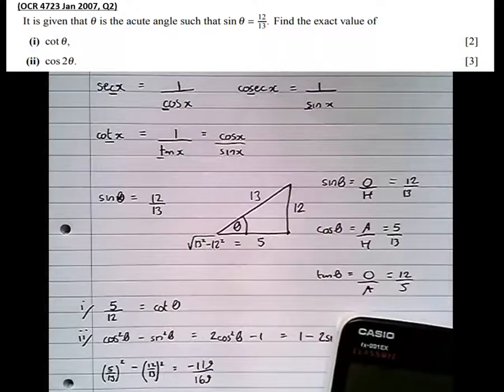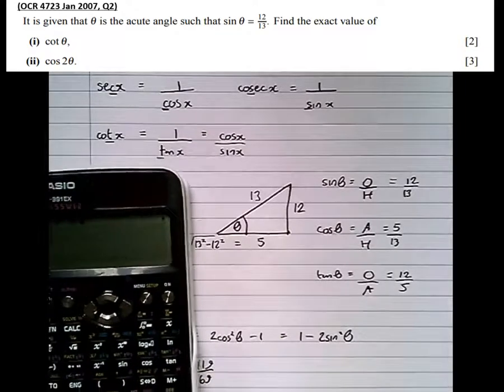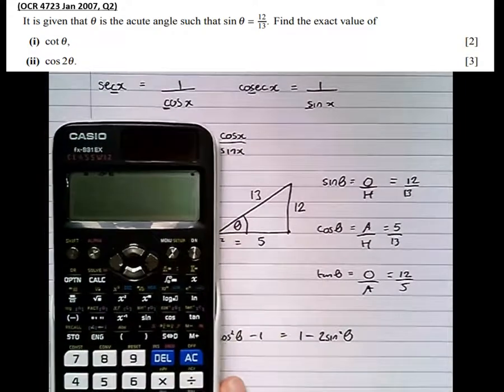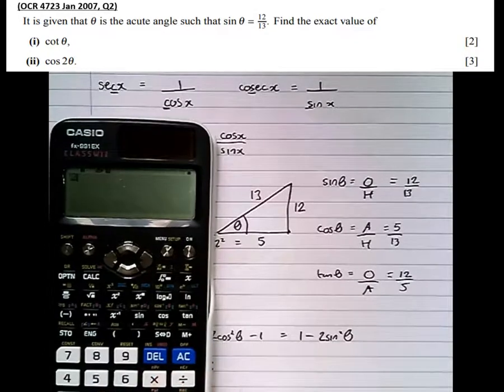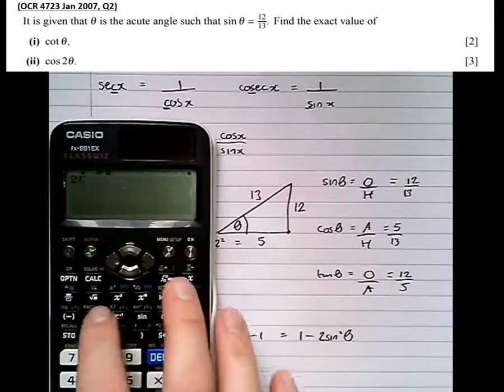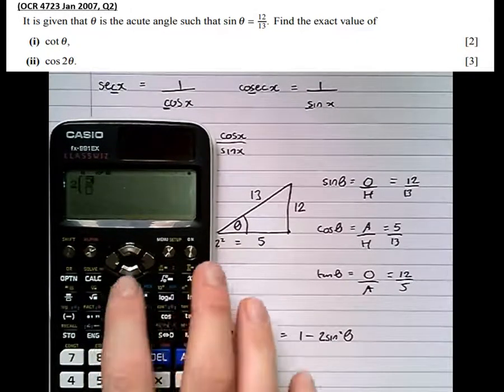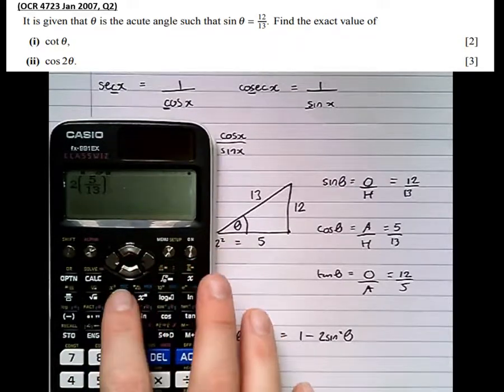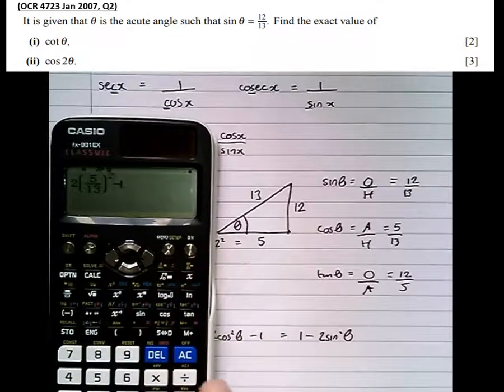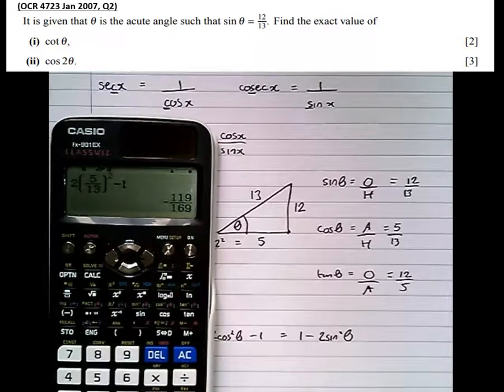So we've got 2cos²θ - 1. So 2 times cos²θ, which is (5/13)² minus 1, gives exactly the same answer.